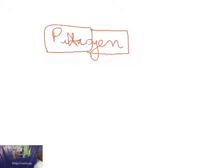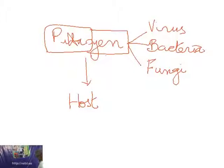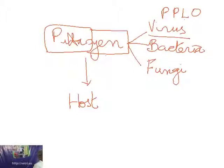In many hospitals you have a separate department called pathology. Now, when a pathogen is attacking a particular organism, that organism is called a host. This pathogen could be a virus, it could be a bacterium, or it could be a fungus. Sometimes other organisms are also there — many diseases are caused by mycoplasma, also called PPLO, pleuro-pneumonia-like organisms. Viroids are also there — those which look like viruses but are not true viruses.